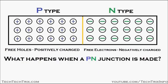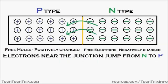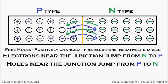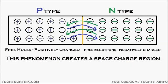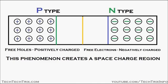What happens when a PN junction is made? Electrons near the junction jump from the N-type semiconductor towards the P-type semiconductor, and holes near the junction jump from the P-type semiconductor towards the N-type semiconductor. This phenomenon creates a space charge region at the junction.